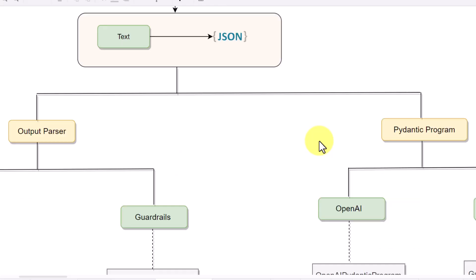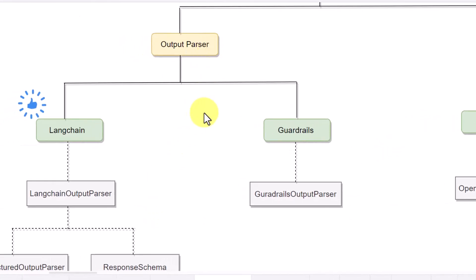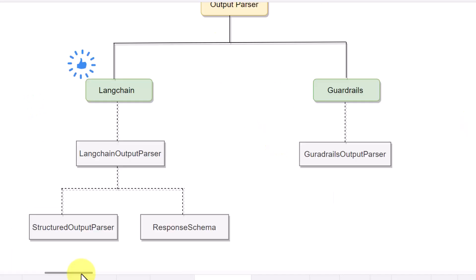So how are we going to achieve it? In LlamaIndex there are primarily two options: one is using an output parser and the other is a Pydantic program. In this video we are going to focus on the output parser. Under output parser there are also two options — one is we can use the LangChain package or we can use Guardrails. Our focus in this video is going to be on LangChain and how we can generate a structured output using LangChain.